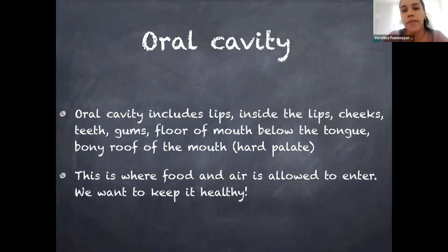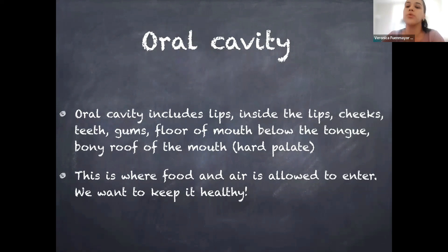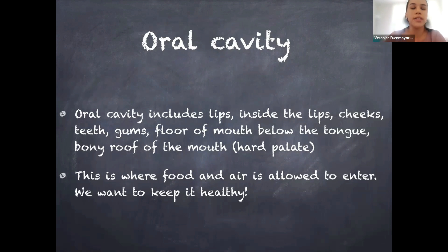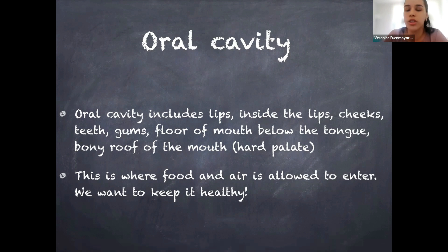The oral cavity includes the lips and everything inside the lips — cheeks, teeth, gums, the floor of the mouth, and the roof of the mouth. It starts with the lips and ends with the throat. The mouth is the entry point and is important for several functions such as breathing, speaking, and digesting food. That's why we want to keep it healthy.